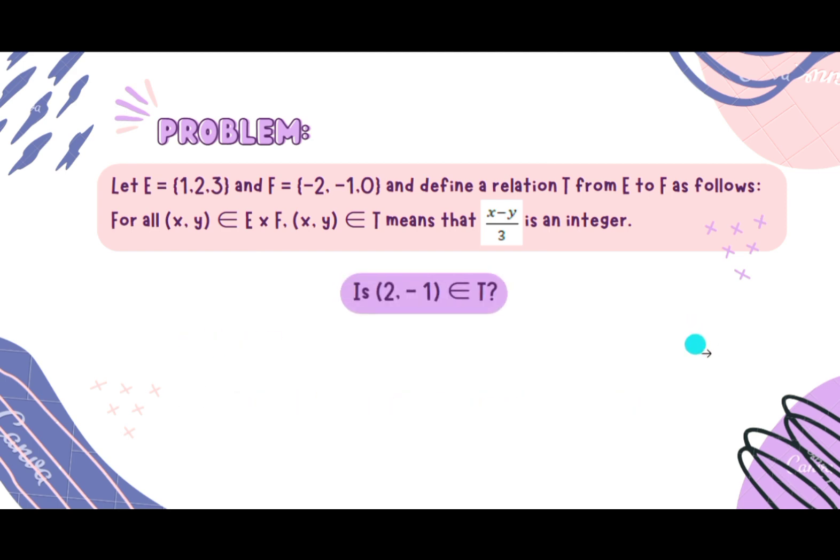Here we have: is ordered pair (2, -1) element of T? Again, just substitute. We'll have 2 minus -1, which is 3. 3 divided by 3 equals 1. So the answer is yes.